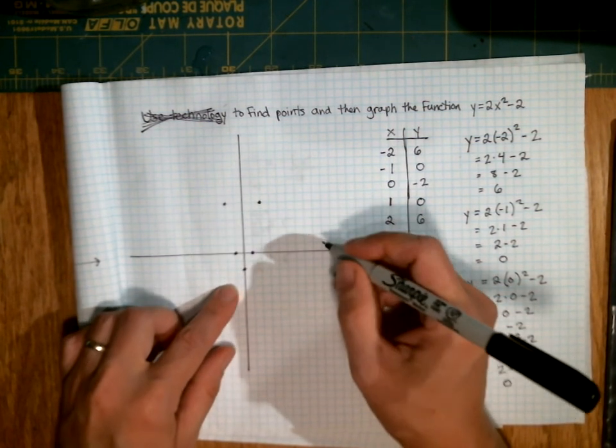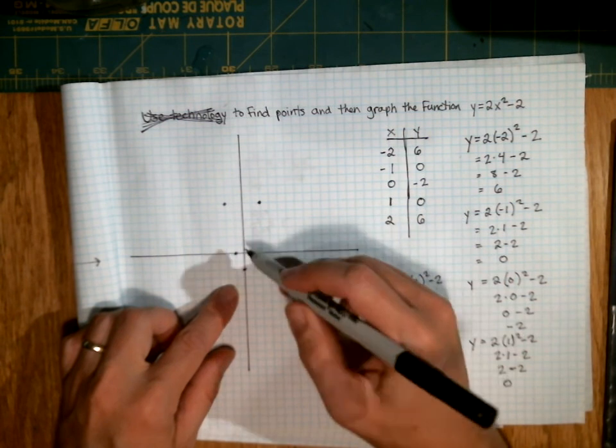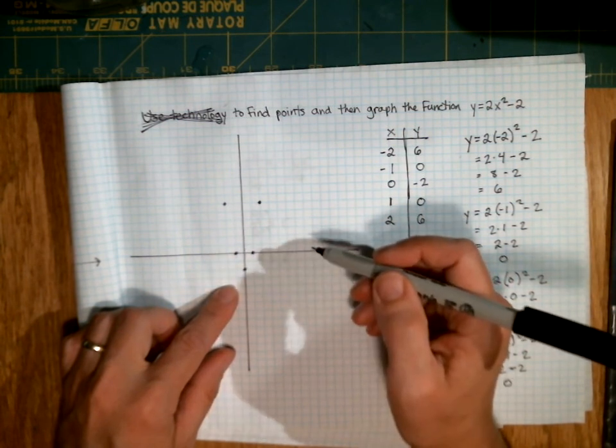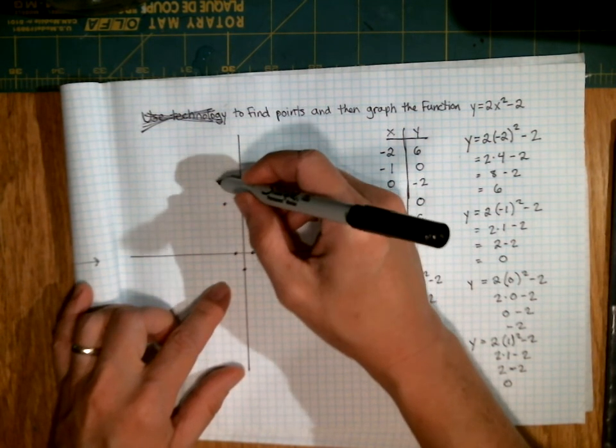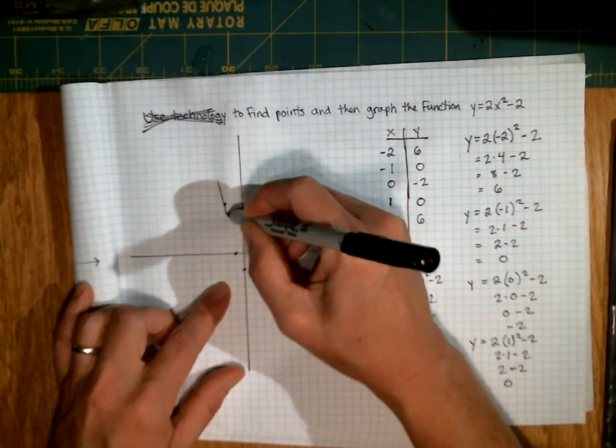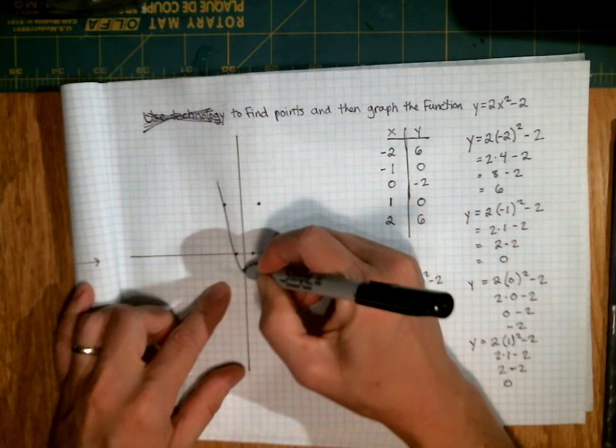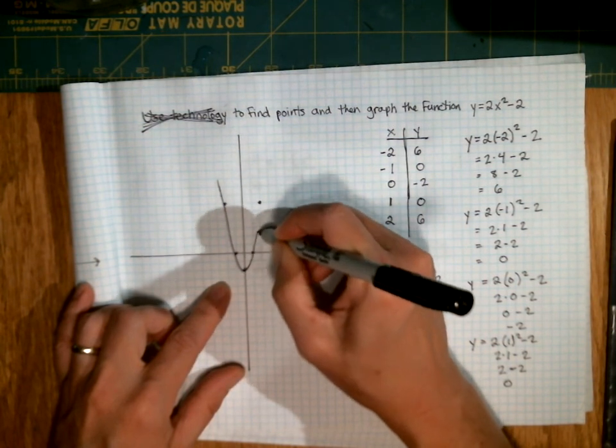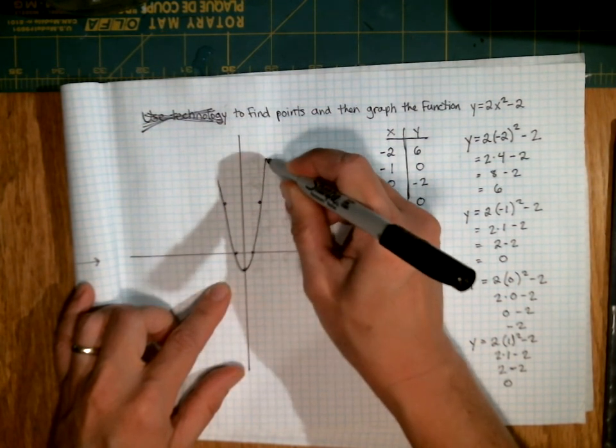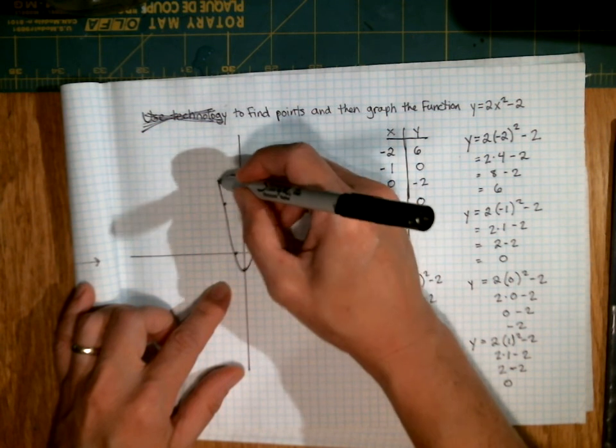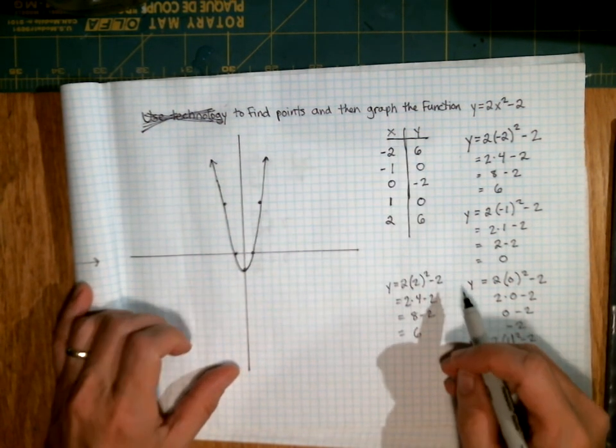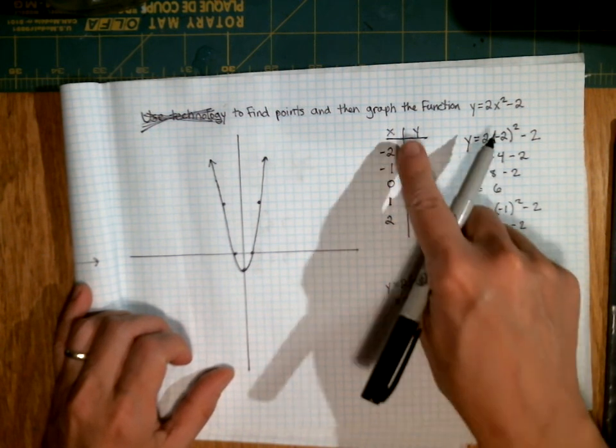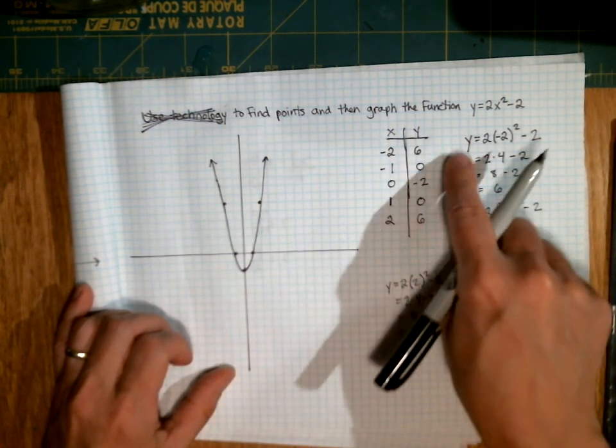And then once you've plotted your points, delta math is not going to give you a ruler because this is not a straight line, but it's going to ask you to sort of sketch in what the graph looks like. And it doesn't have to be perfect, but this graph looks about like this. It actually makes a curve. And you have to go all the way to the edge and you'll know you've gotten there when you see the little arrows show up. So that is how you make a table and then plot the points to graph.